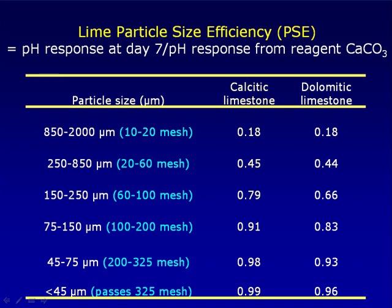We compared the pH response for calcitic limestones and dolomitic limestones to the pH response when we combined reagent calcium carbonate into peat. Those lime particle size efficiency factors are shown in this table. As we move down in the table, we go from very coarse down to very fine limestones, with values for both calcitic limestones and dolomite. You can see that calcite is slightly more reactive than dolomite. As we come down to the finest fraction, we have almost the same reactivity as we would see from reagent grade calcium carbonate.